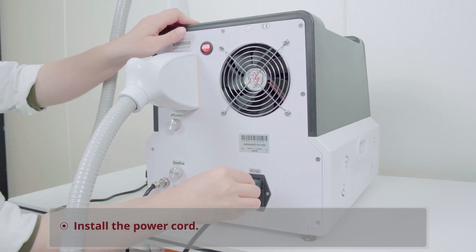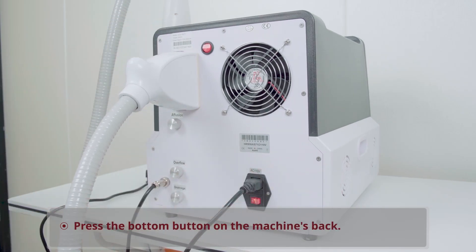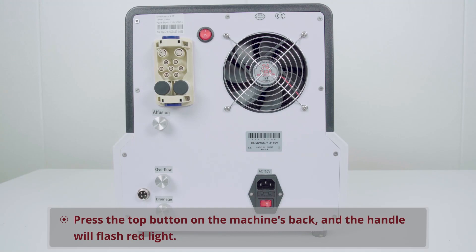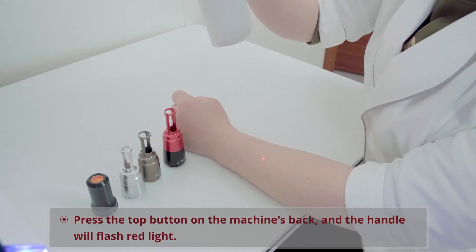Install the power cord. Press the bottom button on the machine's back, insert the key and rotate it to the right to start the machine. Press the top button on the machine's back and the handle will flash red light.